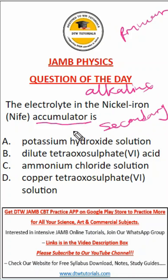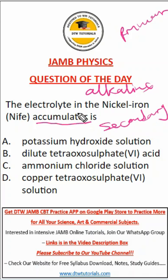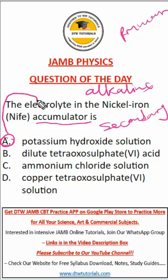The nickel-ion accumulator is sometimes called the alkaline accumulator. You also have the lead-acid accumulator. Now, in this particular accumulator, on the positive electrode you have nickel hydroxide, on the negative plate you have iron, and the electrolyte is potassium hydroxide dissolved in water.